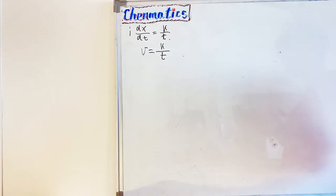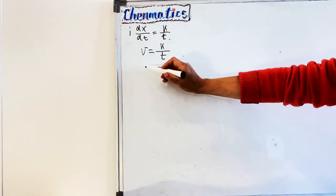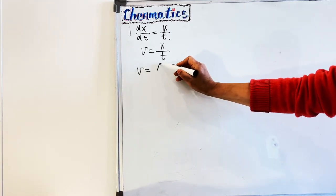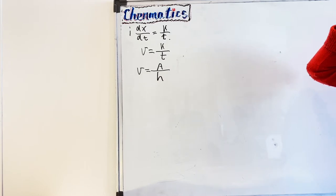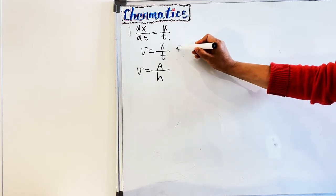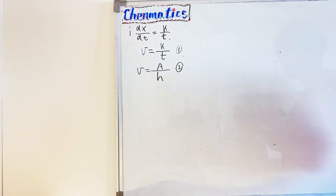Now we need to prove why the velocity of the snowplow equals k over t. From the question, they give us two very important pieces of information, so we always need to read the question carefully. Firstly, they tell us the velocity of the snowplow equals a over h, where a is a constant and h is the height of the snow. We call what we need to prove equation 1, and what they give us equation 2.